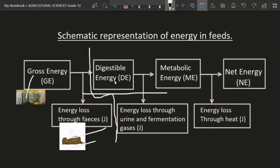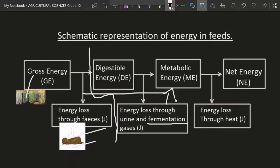From the digestible energy there's going to be loss of energy through urine and fermentation. For urine to be produced, there's energy needed to perform that. Fermentation occurs in the large intestine, whereby microbes release fermentation gases to ferment some food particles that were not digestible in the stomach. After this process, our energy is going to be metabolic energy.